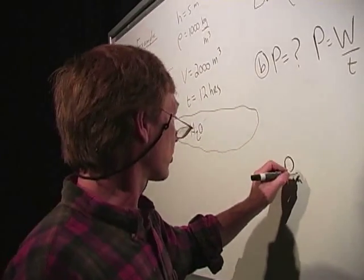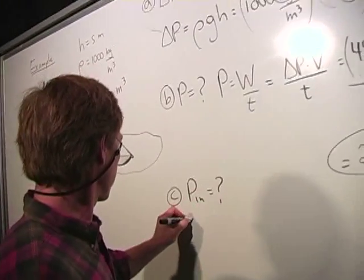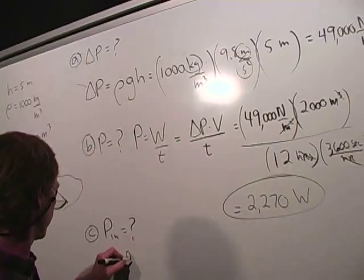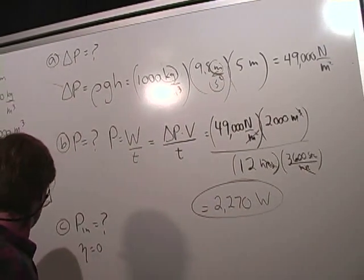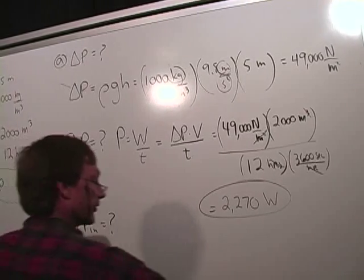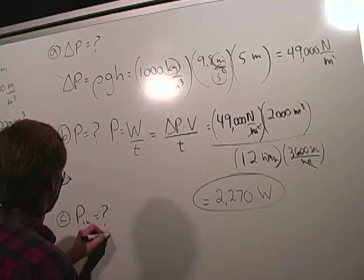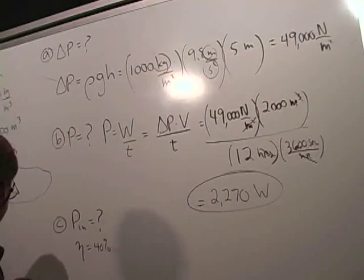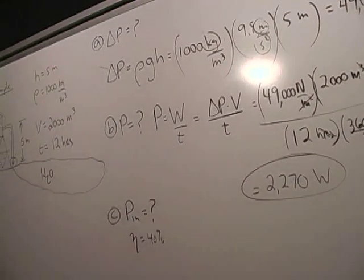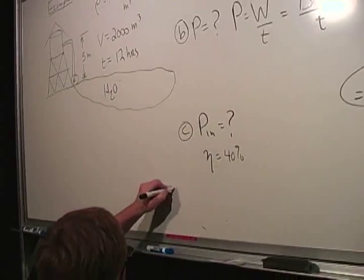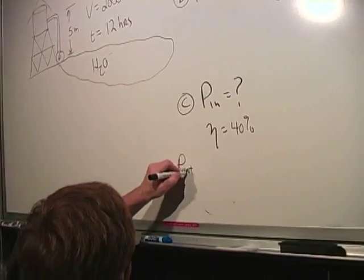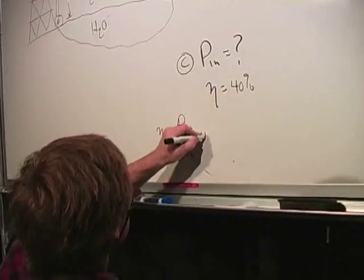Let's find out what the input power is if we have an efficiency of 40%. I guess I'll say 40% this time. Let's see.